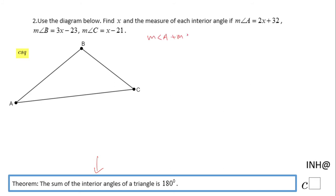In this moment I'm going to replace each measure of each angle with the expression given. So we have here 2x + 32, that is the measure of angle A, plus 3x - 23, that is the measure of angle B.